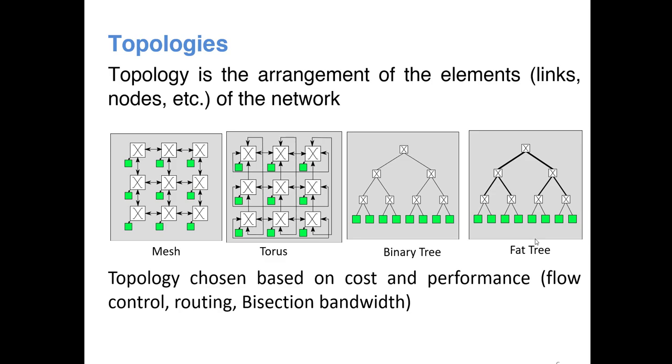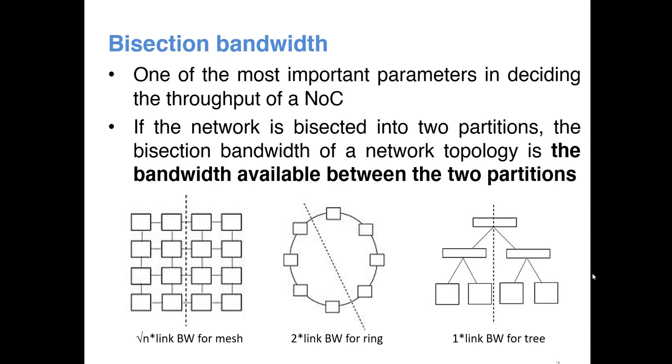I have shown only four cases here, but we have ring topology, star topology, hypergraph, all kinds of different topologies are possible. Now topologies are chosen based on the cost and performance, cost in terms of flow control, routing, and bisection bandwidth.